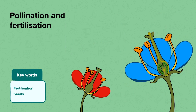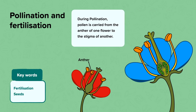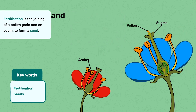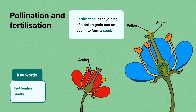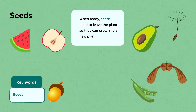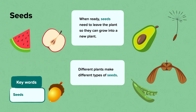Pollination and fertilisation. During pollination, pollen is carried from the anther of one flower to the stigma of another. Fertilisation is the joining of a pollen grain and an ovum to form a seed. When ready, seeds need to leave the plant so they can grow into a new plant. Different plants make different types of seeds.